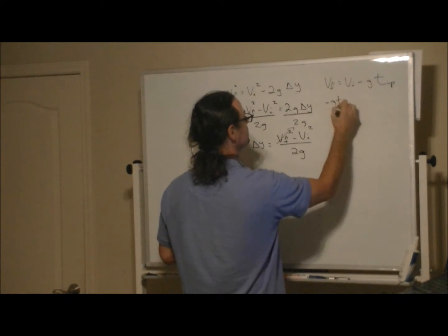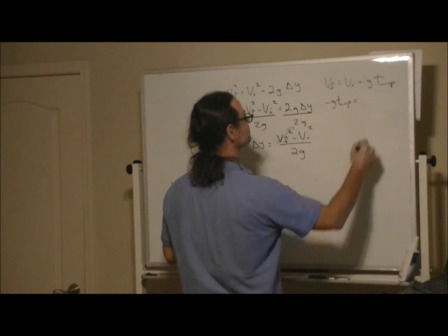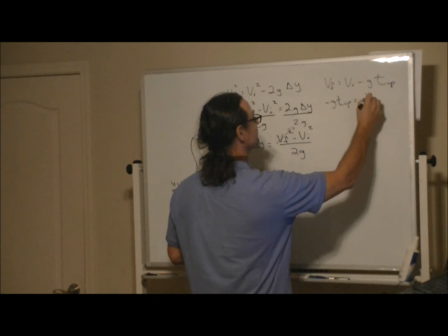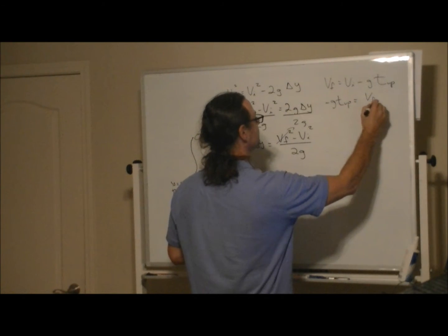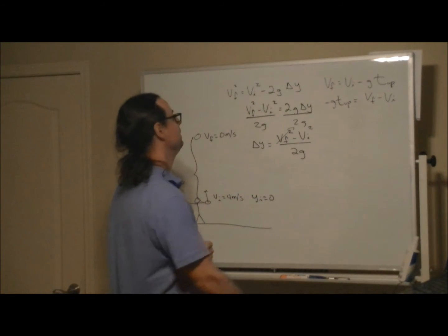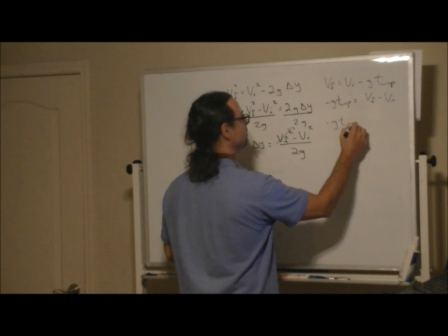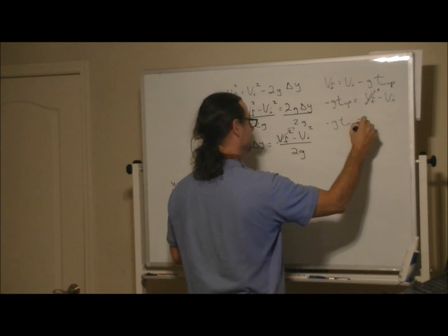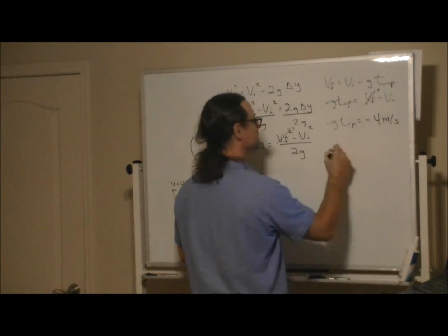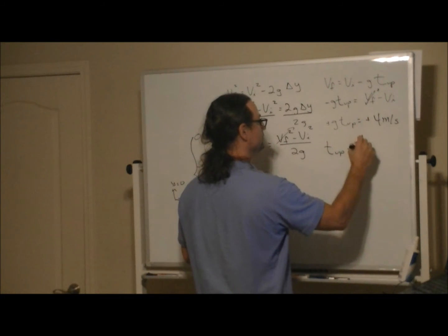Equals v final minus v initial, and so minus g—v final is zero—equals minus 4 meters per second. So t up equals, negative signs cancel out, 4 meters per second over 9.8 meters per second squared.